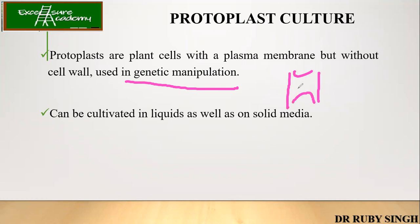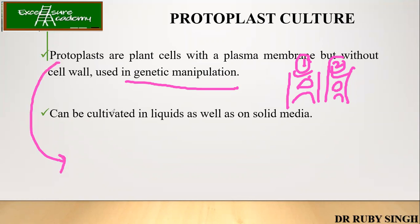In the plant cell, the fusion of two cells won't be possible if the cell wall is present. So in order to have genetic manipulation or fusion of two cells — combining the nucleus of one cell with another — we need to remove the cell wall. Since the plant cell wall is made up of cellulose, the enzyme used is cellulase.